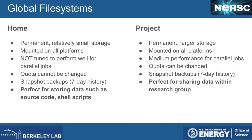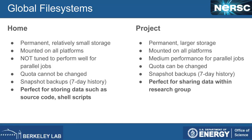Let's talk about our file systems. Home is your home directory — we keep it small on purpose, around 40 GB, for storing source code or shell scripts. It's not tuned for parallel jobs, so don't run jobs out of it. It does have a snapshot backup system, so if you accidentally delete a file, you can recover it.